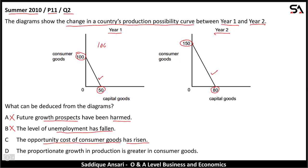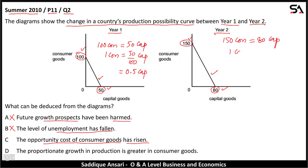In Year 1, 100 consumer goods are equal to 50 capital goods, so one consumer good is equal to 50 divided by 100 capital goods, which equals 0.5 capital goods. In Year 2, 150 consumer goods are equal to 80 capital goods, so one consumer good equals 80 divided by 150 capital goods.